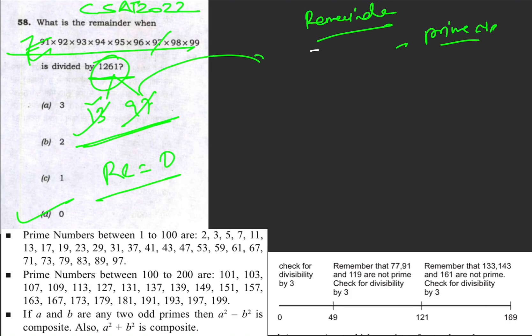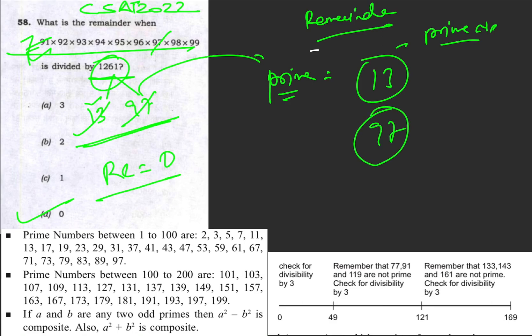There is another method through which you can identify prime numbers. A prime number is a number which cannot be reduced or simplified further — it is whole. For example, 13 is a prime number, 97 is a prime number, 19 is a prime number — none of these can be reduced further. There is also a shortcut way to check whether a number is prime.